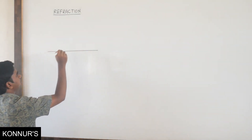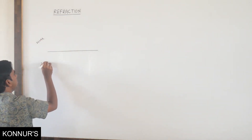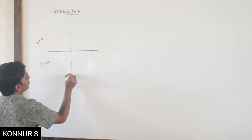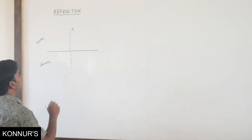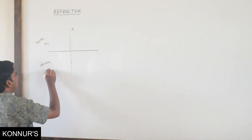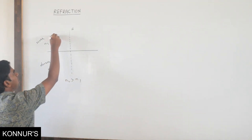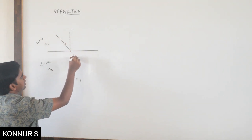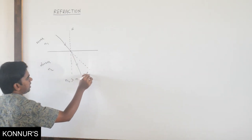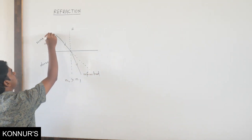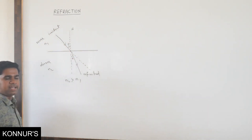If we take two different mediums of different densities, I will take this as rarer and this is a denser one. If I draw a normal to this, I will take this as normal EN. So here the refractive index I will take as N1 and N2. Since this is rarer and denser, obviously N2 is greater than N1. When a ray of light is incident, instead of traveling in its original path, it will change its direction. This is the refracted ray, this is the incident ray, I is angle of incidence and R is angle of refraction.